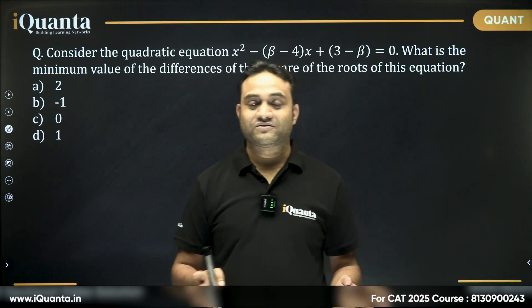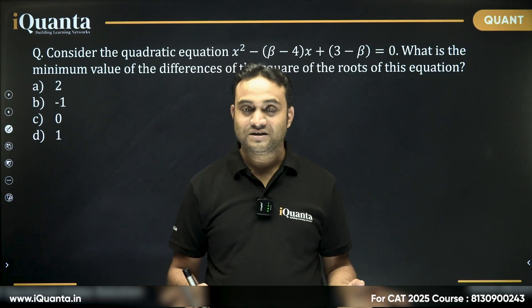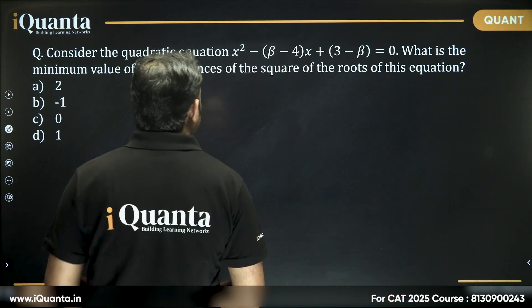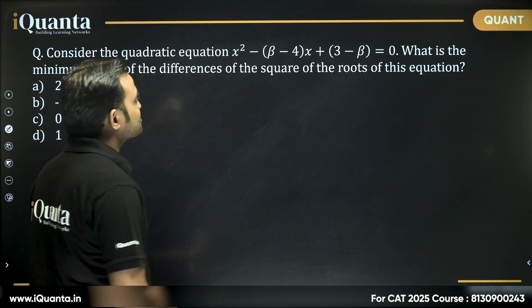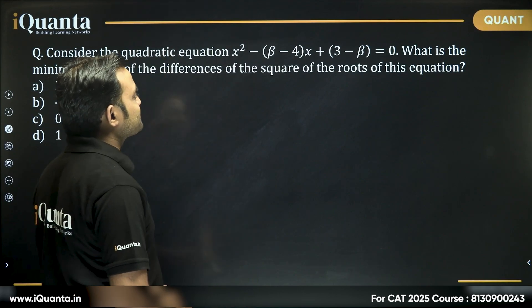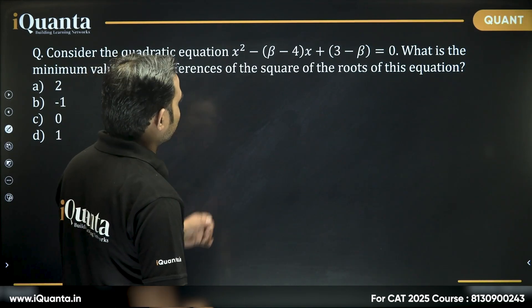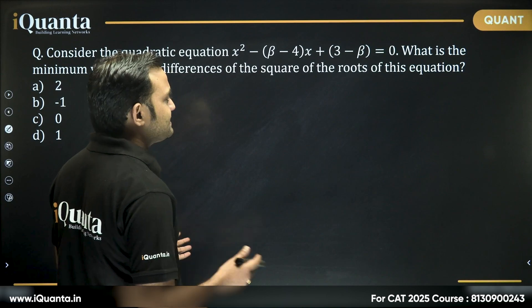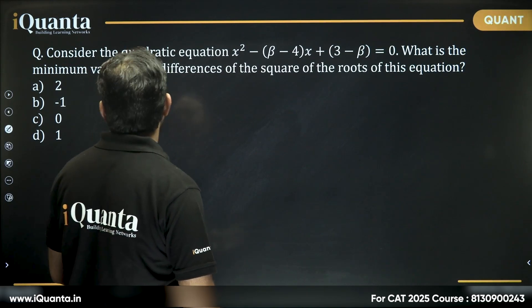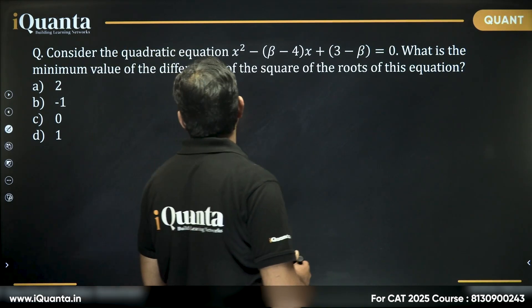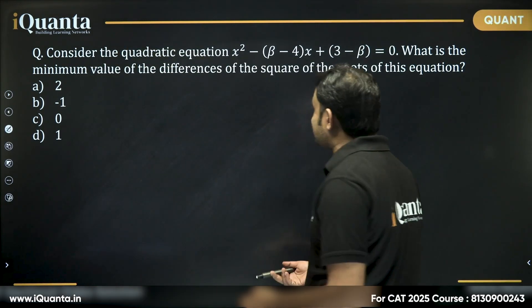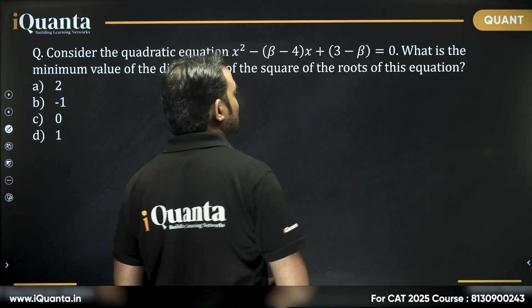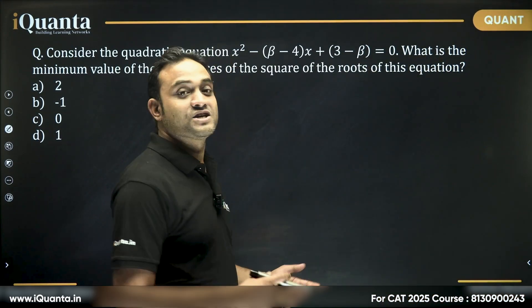I hope you must have tried this question. Consider the quadratic equation x² minus (β minus 4)x plus (3 minus β) = 0. What is the minimum value of the difference of the squares of the roots of this equation?